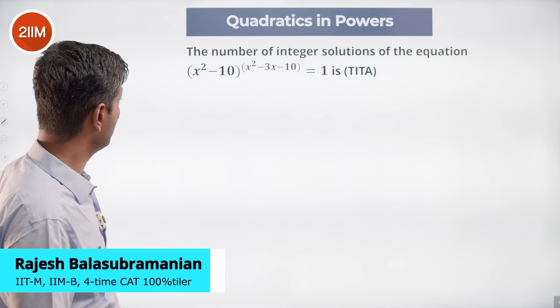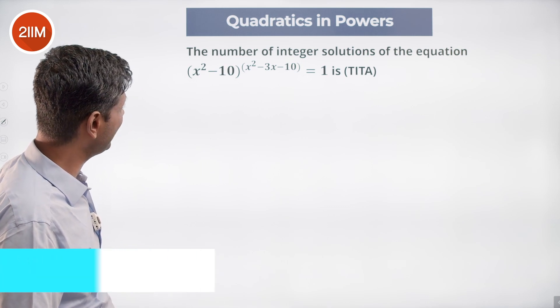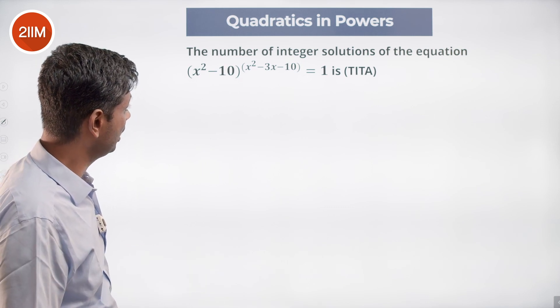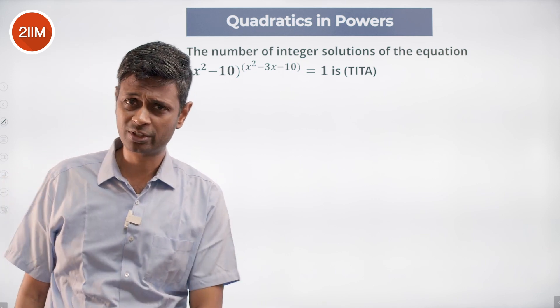The number of integer solutions of the equation (x² - 10)^(x² - 3x - 10) = 1 is... This is a very beautiful question. First of all,